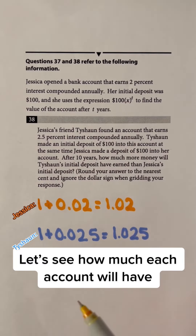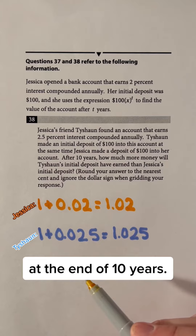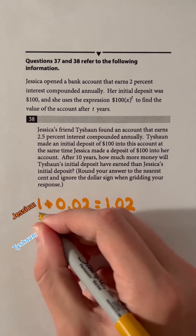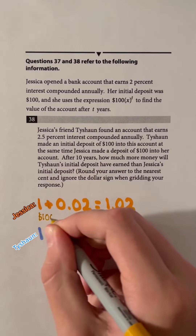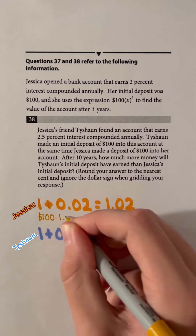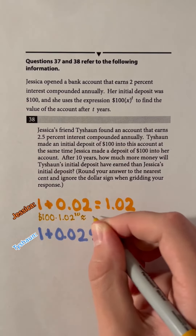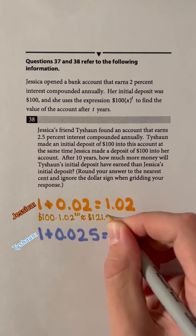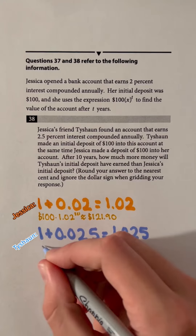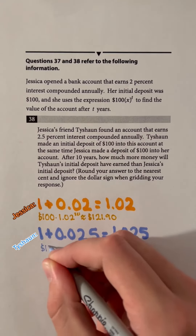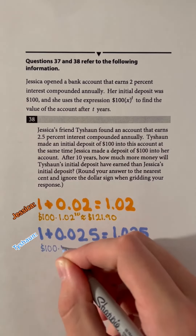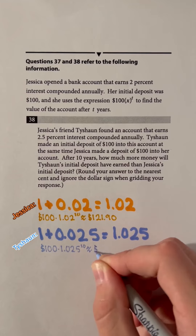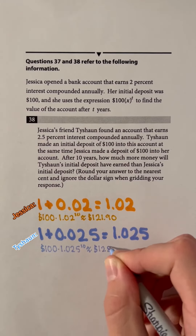Let's see how much each account will have at the end of 10 years. For Jessica, we will have $100 times 1.02 to the power of 10, which is approximately $121.90. For Tishan, we will have $100 times 1.025 to the power of 10, which is approximately $128.01.